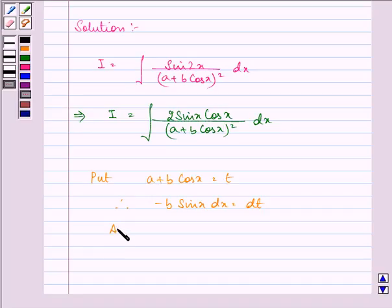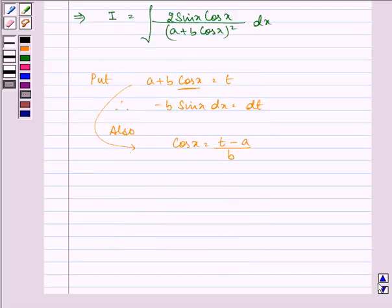Also we have the value of cos x as t minus a upon b. So on substituting we have